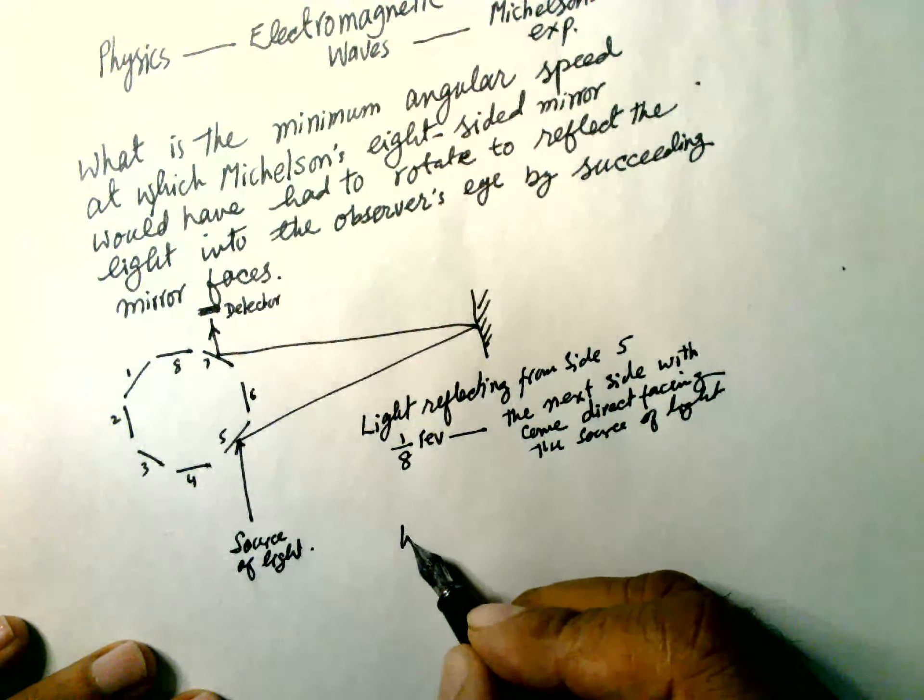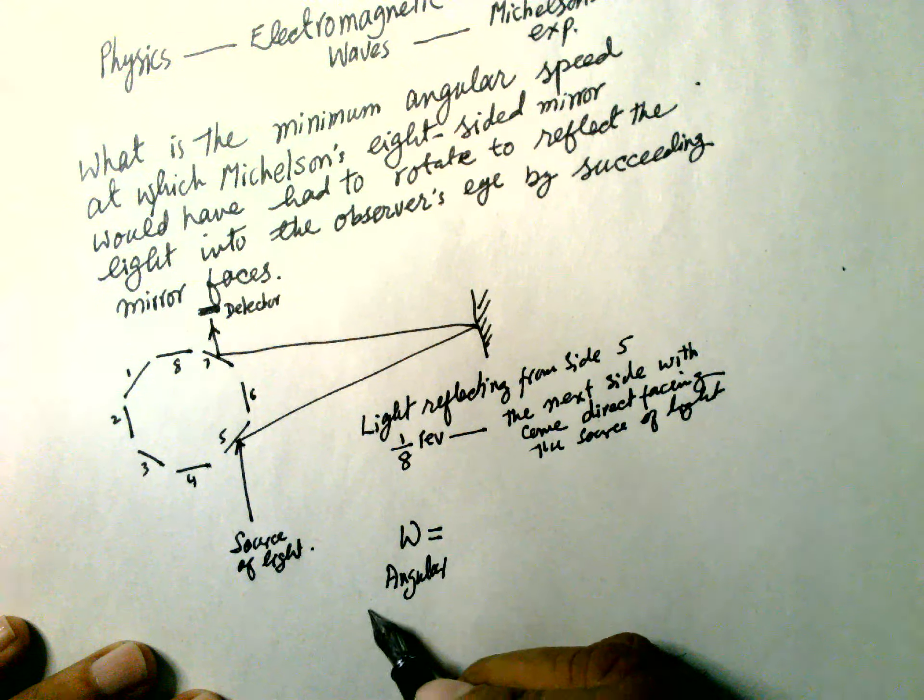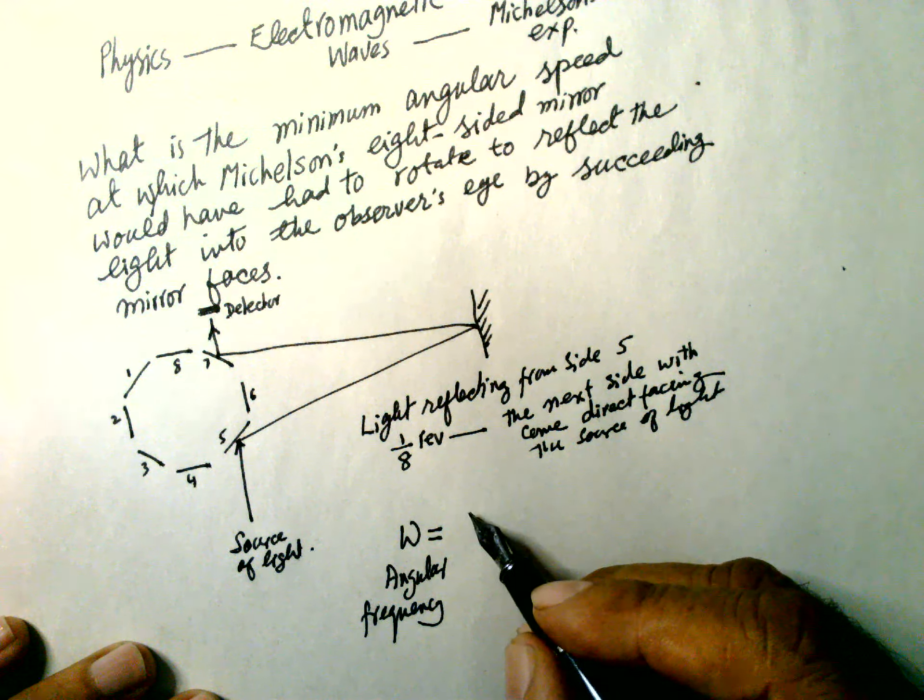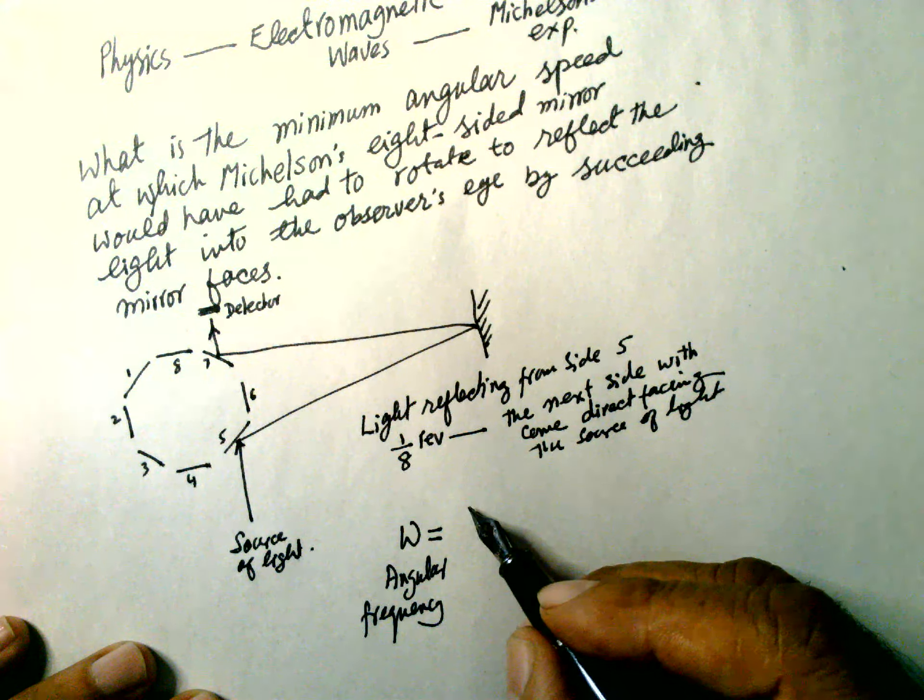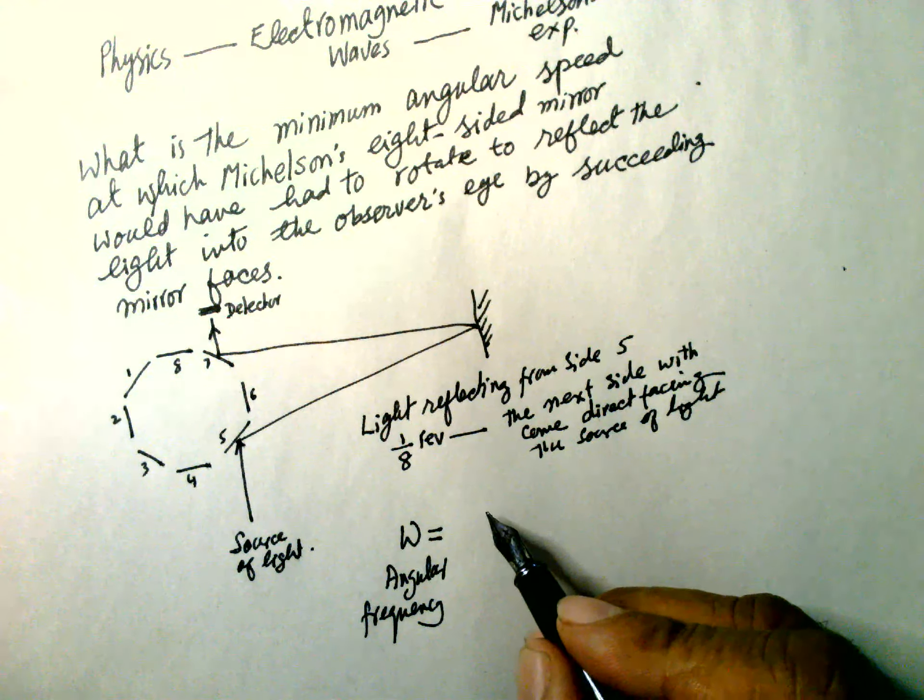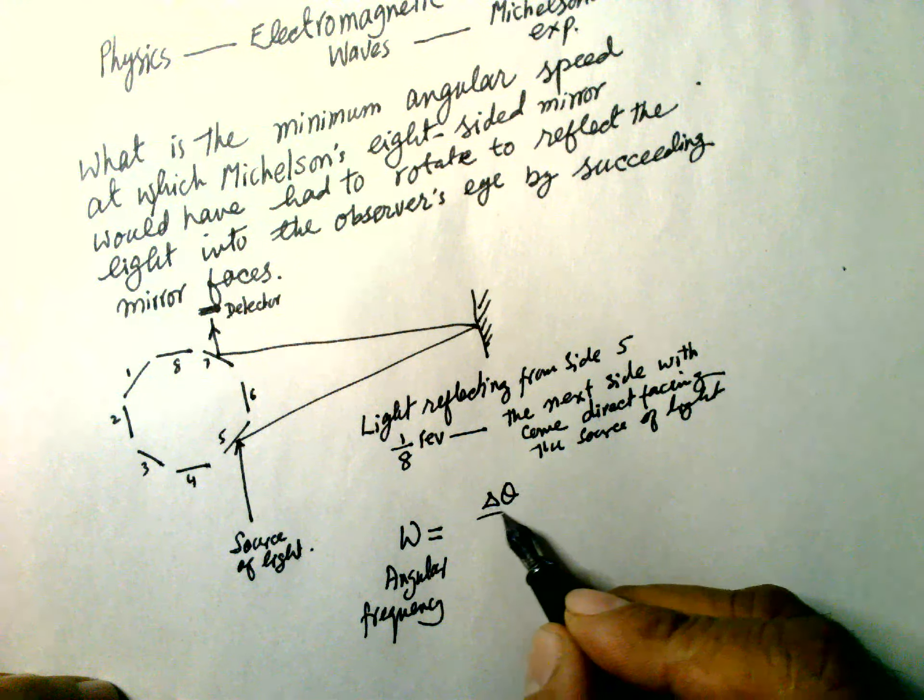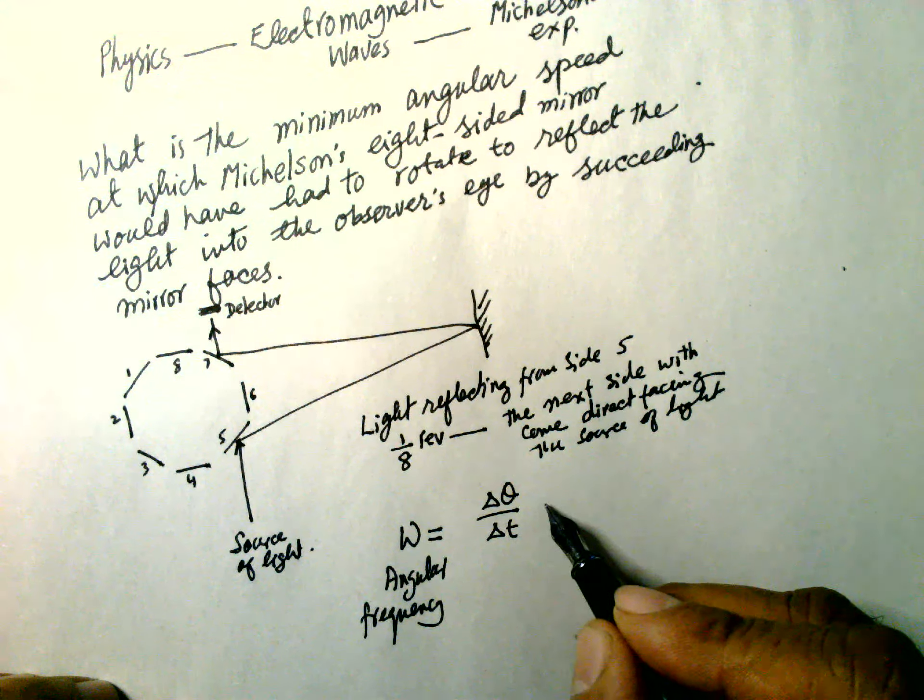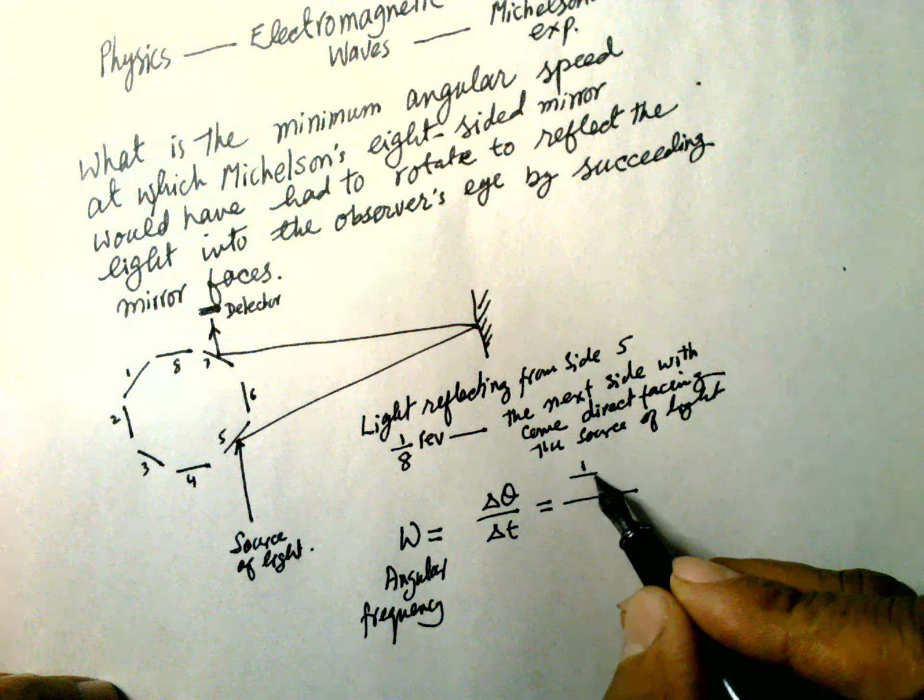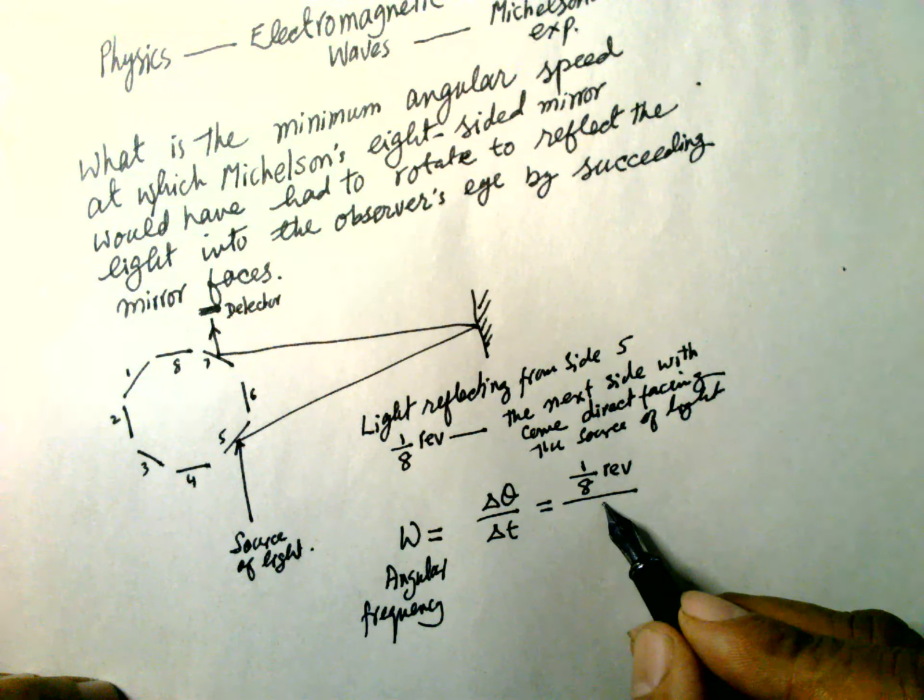So the angular frequency, or angular speed, is equal to delta theta over delta t. Delta theta is one-eighth revolution divided by delta t.